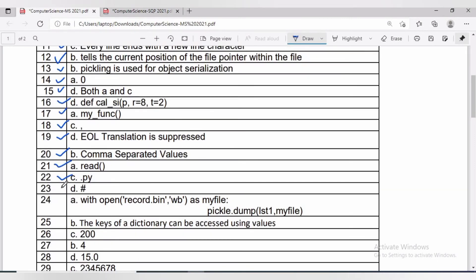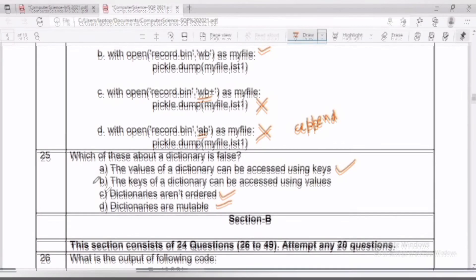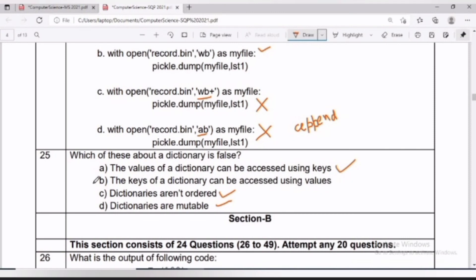Question number 25: which of these about a dictionary is false? The values of a dictionary can be accessed using keys, which is correct. Option C: dictionaries are not ordered - yes, dictionary is an unordered set of key-value pairs. Fourth option: dictionaries are mutable, which is absolutely correct.